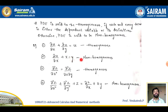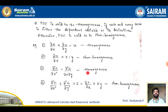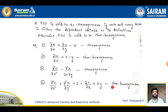∂²z/∂x² = ∂²z/∂x∂y is a homogeneous PDE. While ∂²z/∂x² + ∂²z/∂y² + z = ∂z/∂x + y is a non-homogeneous partial differential equation.